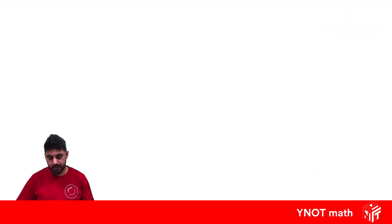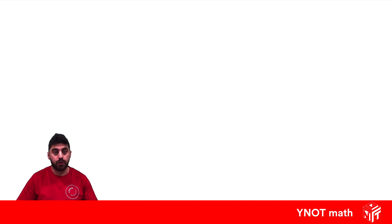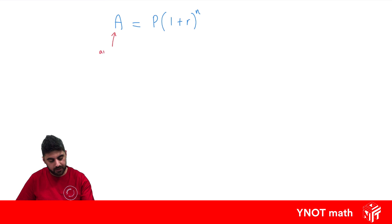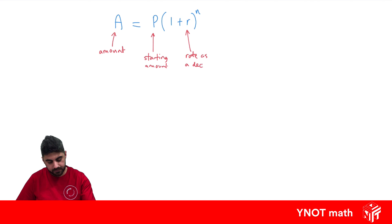Compound interest is different to simple interest because it compounds the interest more often. We earn interest on interest that we've already earned, so we end up making more interest with compound than simple. There's a formula to calculate compound interest: A equals P outside of (1 plus r) to the power of n. A is your total amount, P is the starting amount, r is the rate as a decimal, and n is the number of time periods.